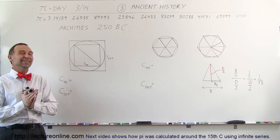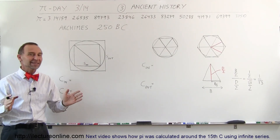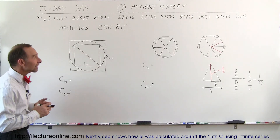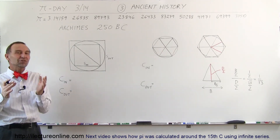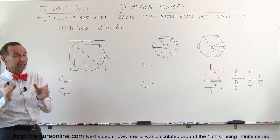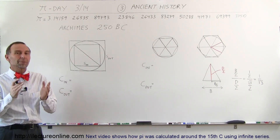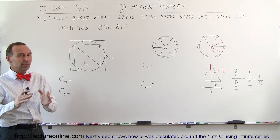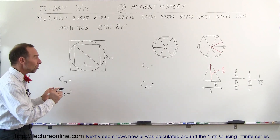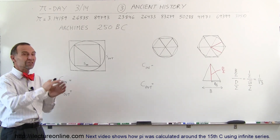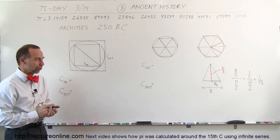Welcome to Electron Line, and in celebration of Pi Day, March 14th, we're going to take another look and see how in ancient history, people that were actually pretty clever found ways to try and calculate the number Pi. They realized that Pi was a special number — the ratio of the circumference of a circle divided by its diameter.